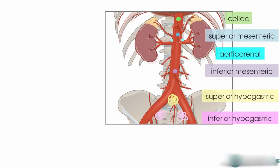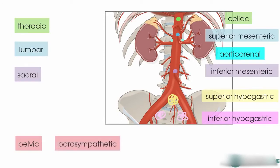In terms of the splanchnic nerves, the abdominopelvic splanchnic nerves, you've got the thoracic splanchnics, the lumbar splanchnics, and the sacral splanchnics. Pelvic splanchnics are part of the parasympathetic nervous system. An easy way to remember that is sacral sympathetic, pelvic parasympathetic.